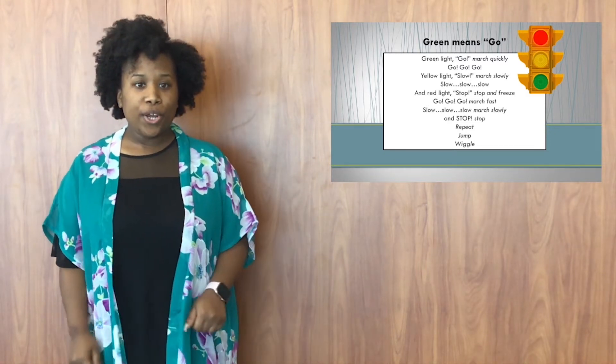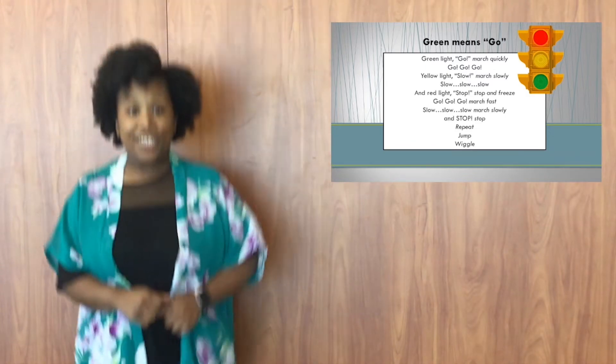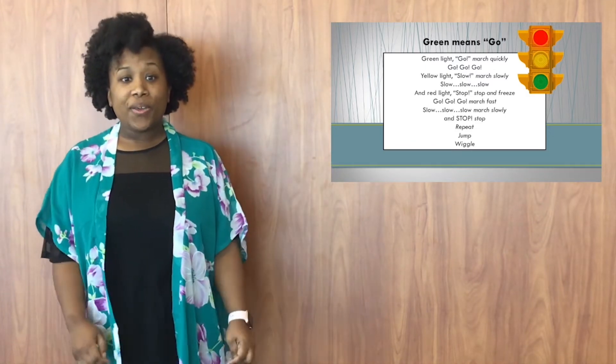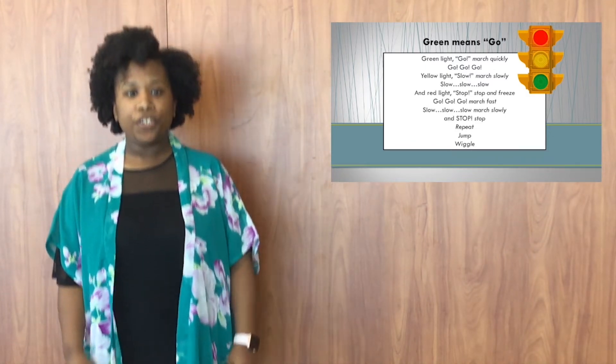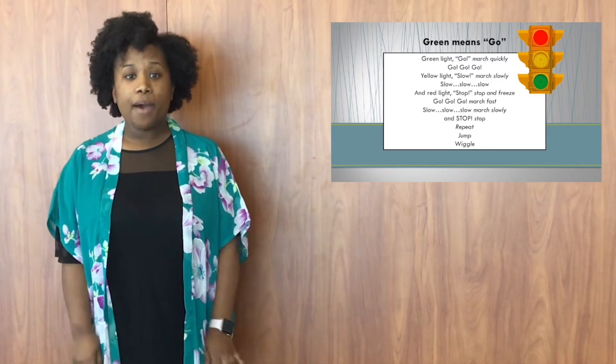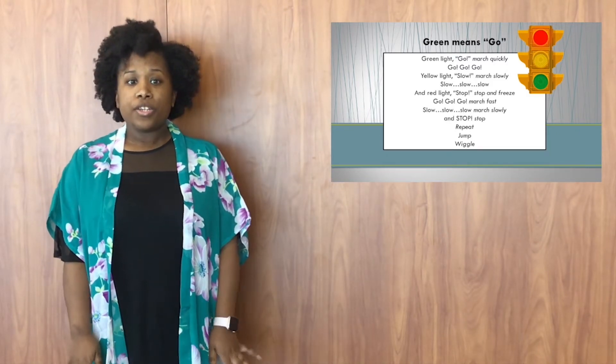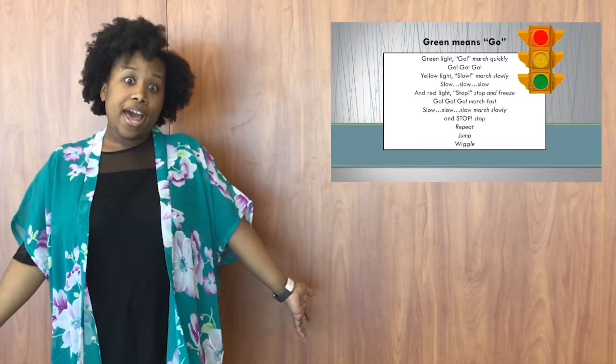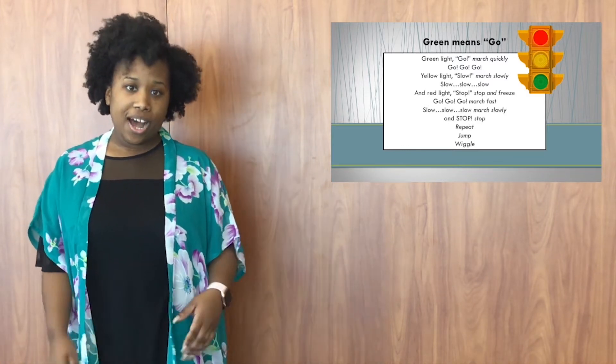Now if we want a green light jump, we can jump. If we want to yellow light jump, jump. And then if we want a red light stop, stop again. So you can do multiple actions with the red light green light concept.